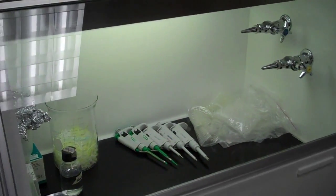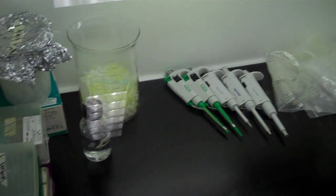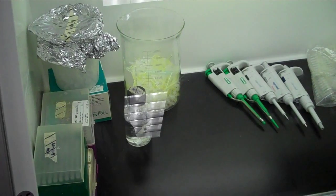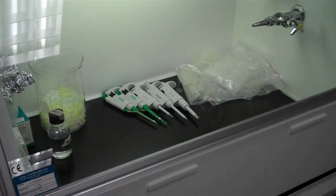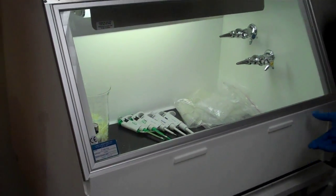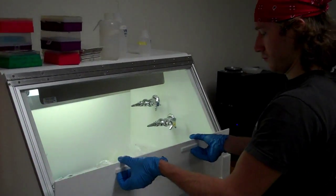This is the PCR hood. We use this area to keep contamination out of our samples, and we keep the area clean using bleach and ethanol to prevent DNA contamination.